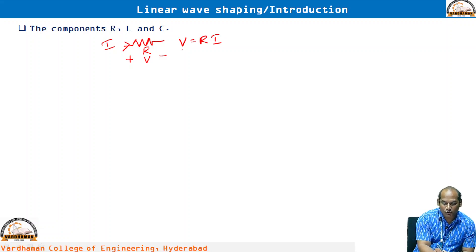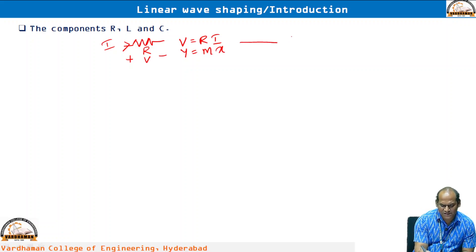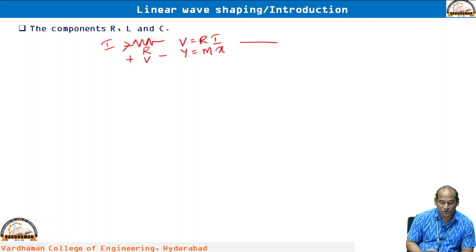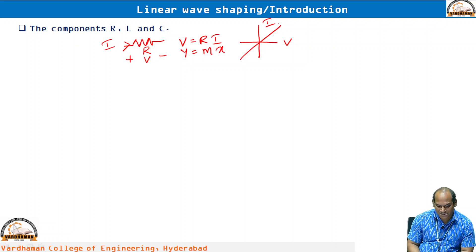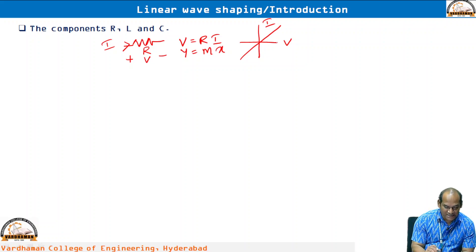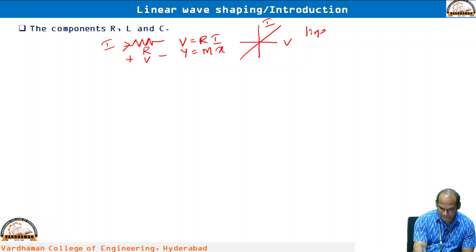This is similar to the linear equation y equals mx, so we can tell that resistor is a linear element. If you take voltage on the y-axis, R will become the slope; if you take voltage on the x-axis, 1/R will become the slope. At constant temperature, the resistance is constant, so the voltage-current relationship follows y equals mx — it is a straight line passing through the origin.